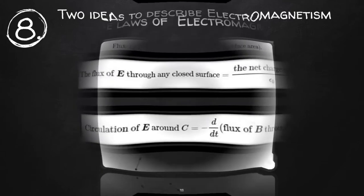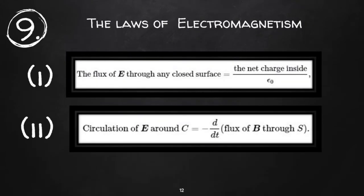There are four laws of electrodynamics. According to the first law, the flux of electric field through any closed surface S is the total charge enclosed by the surface divided by free space permittivity.